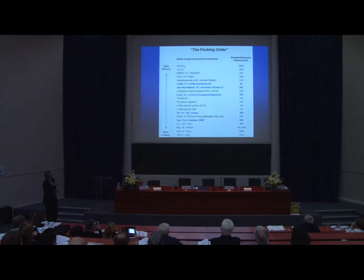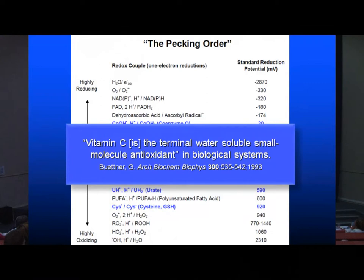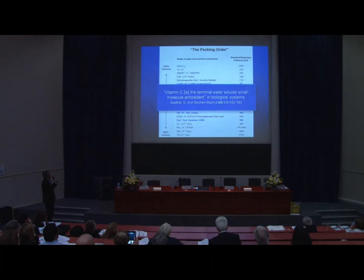Looking at thermodynamics, this is the famous pecking order published by Gary Büttner many years ago. I've inserted here some of the catechins — epigallocatechin, epigallocatechin gallate, epicatechin gallate, and epicatechin — and you can see that all of these catechins are below vitamin C, which is more reducing than any of them. The ascorbyl radical up here is even more reducing, with a standard reduction potential of minus 180 millivolts. The conclusion of this paper was that vitamin C is the terminal water-soluble small-molecule antioxidant in biological systems.